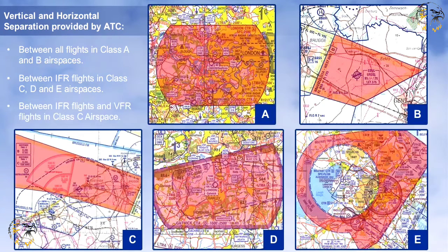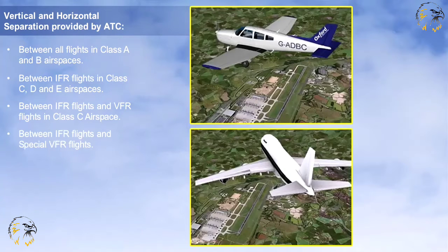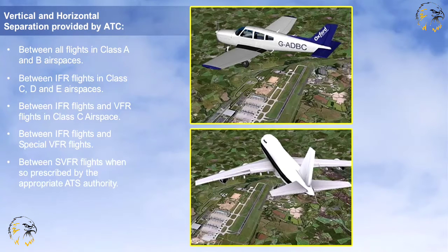Separation is also required between IFR and VFR flights in Class C airspace, between IFR flights and Special VFR flights, and between Special VFR flights when so prescribed by the appropriate ATS authority. However, IFR flights in VMC during daylight in Classes D and E airspace may be cleared to climb and descend whilst maintaining their own separation.